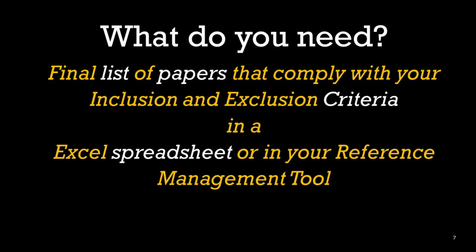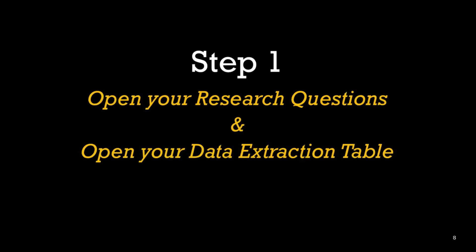So to begin, what do you need? You will need a final list of papers that comply with your inclusion and exclusion criteria in an Excel spreadsheet or in your reference management tool. That is what is required, so I hope you have this ready by now — the list of papers based upon the keywords that you have searched. You have applied the inclusion-exclusion criteria and selected the papers that you are going to use as your primary studies, which we are going to investigate in this SLR. Ideally this should be in the reference tool as well as in the spreadsheet. So what is step one? Open up your research questions and open your data extraction table.